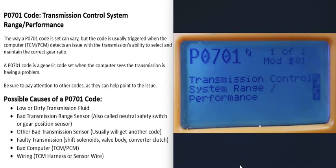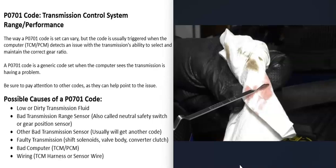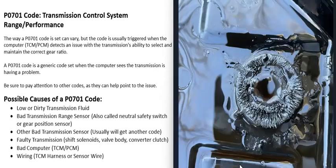The first possible cause of a P0701 code is low or dirty transmission fluid. If the fluid is low or really dirty, that can cause problems. First thing to do, if possible, is check the transmission fluid and make sure it's correct. Some newer vehicles no longer have a dipstick, but if you can check it, it's a good idea. Really dirty fluid can also cause issues, and there's a transmission filter built into the transmission that can become clogged, which can also cause problems.